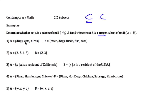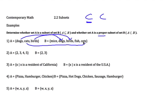Here we have set A as dogs, cats, and birds, and set B as mice, dogs, birds, fish, and cats. To see if A is a subset of B, we make sure every element in A is also in B. We can see dogs, cats, and birds are all in B, so A is a subset of B. For proper subset, we need at least one extra element in B not in A — and since mice and fish are extra, A is a proper subset of B.